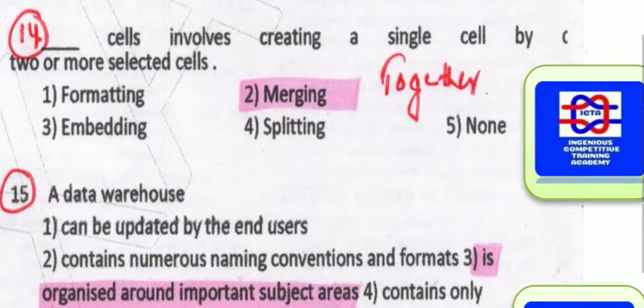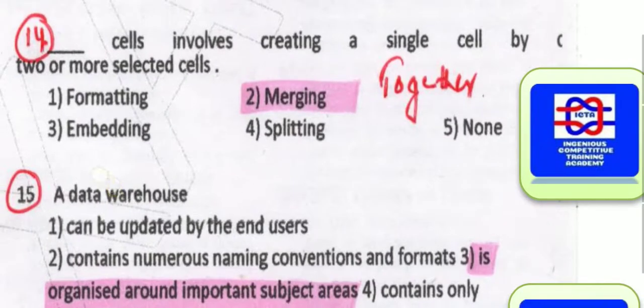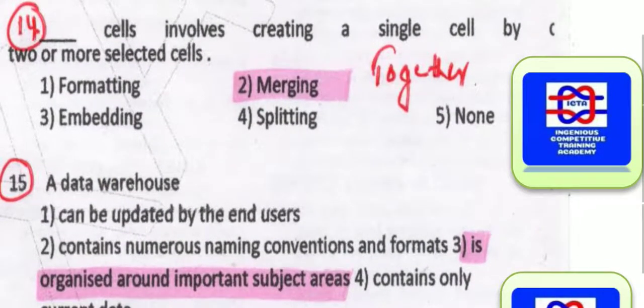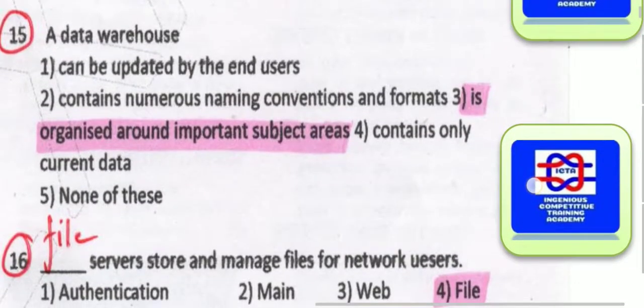Creating a single cell by combining two or more selected cells is known as merging. In the merging process, whatever cells you select will become a single cell. A data warehouse is organized around important subject areas — this is what you have to know about a data warehouse.